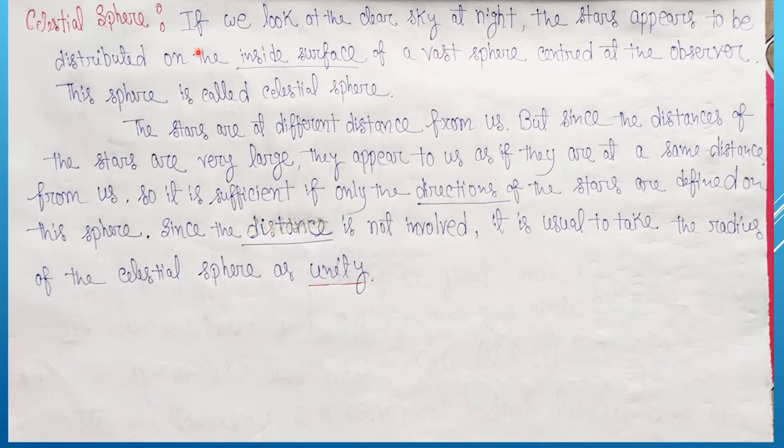So what is the celestial sphere? If we look at the clear sky at night, the stars appear to be distributed on the inside surface of a vast sphere centered at the observer. This sphere is known as celestial sphere.